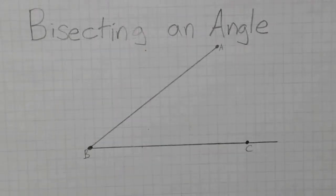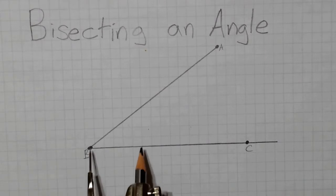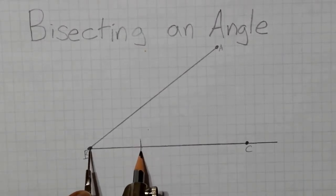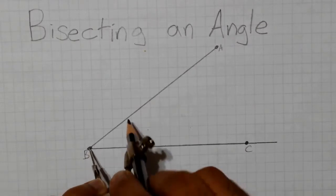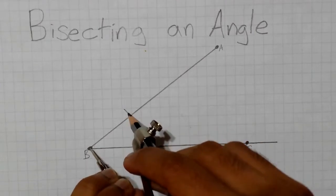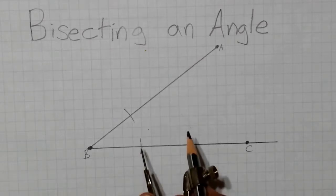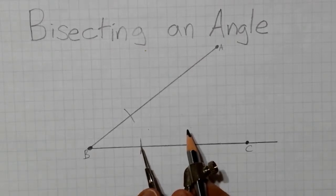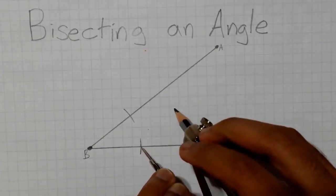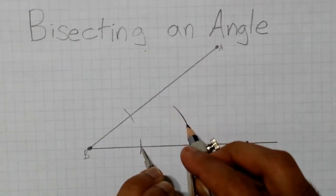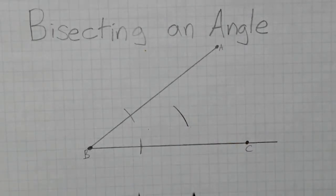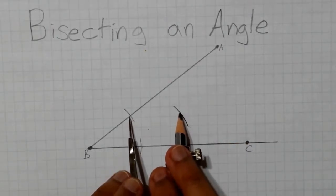Bisecting an Angle. To bisect angle ABC — or, in other words, to divide the angle in two — we first place the tip of the compass on point B. Then make two small arcs of the same length: one intersecting line segment BC and the other intersecting line AB. Then place the tip of the compass on one of the intersections and make another small arc on the interior of the angle. Repeat the same process with the same length on the other intersection.